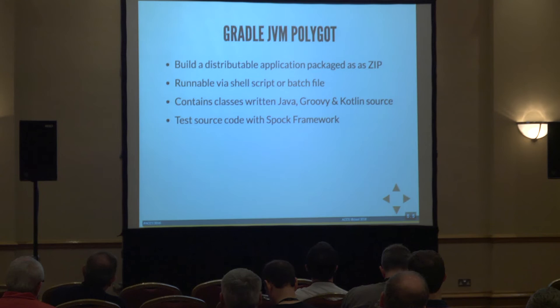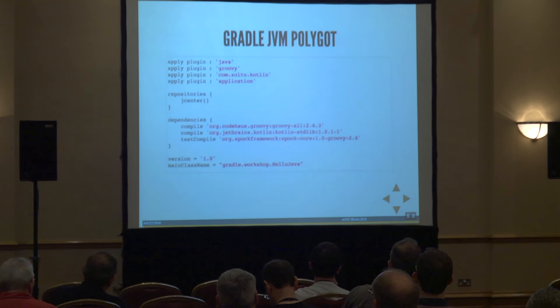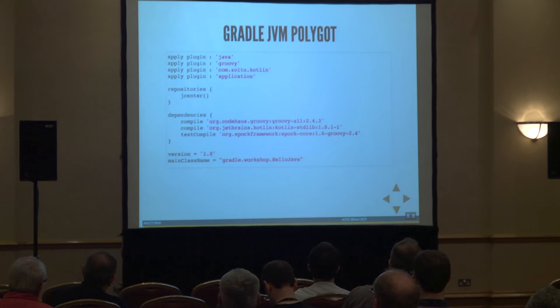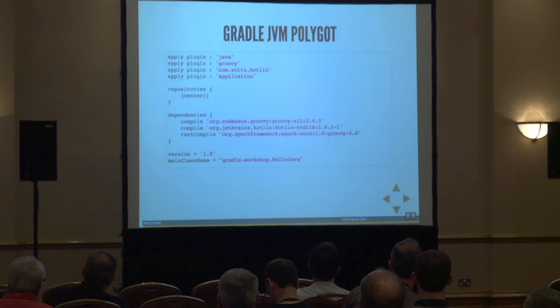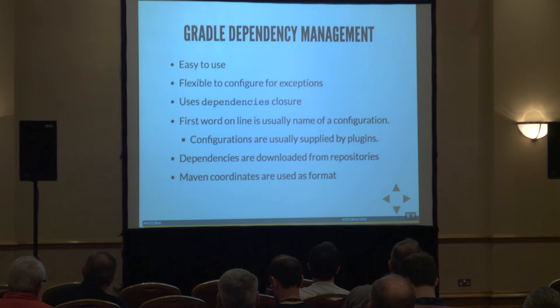I want to show how powerful it is with a little polyglot example. I'm going to build a small application pulling in different languages — Java, Groovy, and Kotlin — throw them all together, mix them up, then bundle it as an application distributed as a zip. That's my project — that's the whole build script. I apply a couple of plugins, give some dependencies: I tell it the standard library for Groovy and which version to use, same for Kotlin. Then we'll test it with Spock, which we'll look at a bit later. And when I zip it up I need to know which JVM class to use as the main class.